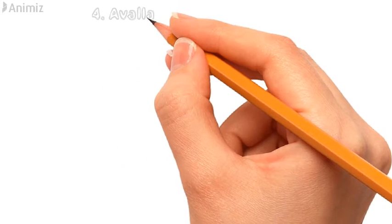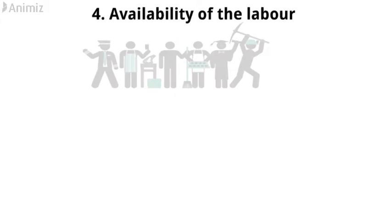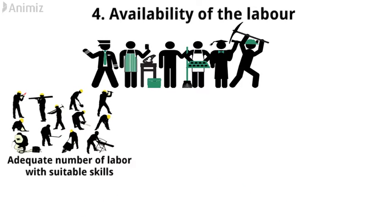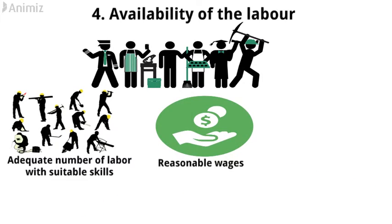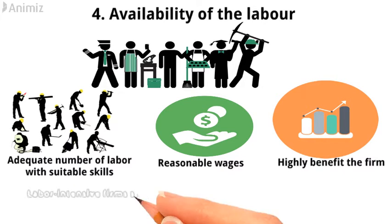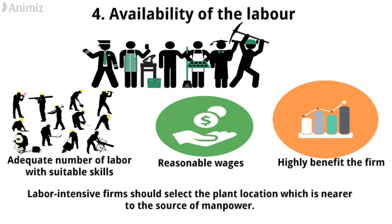Number 4: Availability of labor. Another important factor which influences the plant location decisions is the availability of labor. The combination of an adequate number of labor with suitable skills and reasonable labor wages can highly benefit the firm. However, labor-intensive firms should select the plant location which is nearer to the source of manpower.